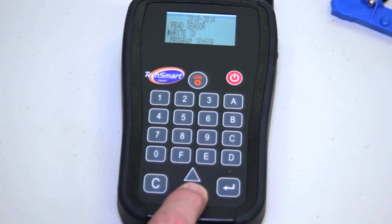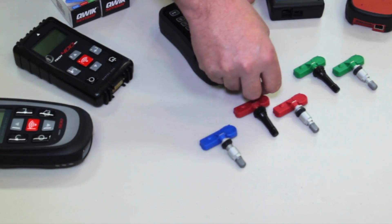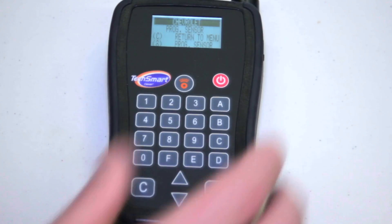I enter quick sensor. I then pick program sensor. I take the sensor and put it in front of the tool and hit the programming button.